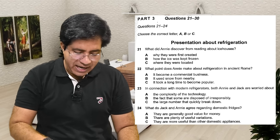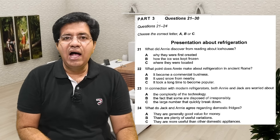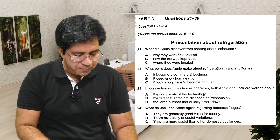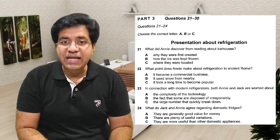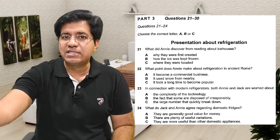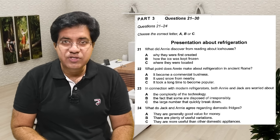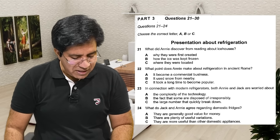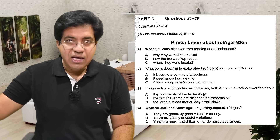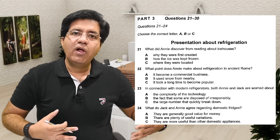Option B: 'How the ice was kept frozen' — shorthand: 'how ice kept frozen.' Option C: 'Where they were located' — 'they' means ice houses, so 'where ice houses located.' You should read pronouns with the nouns they refer to. So: option A — why ice houses created, option B — how ice kept frozen, option C — where ice houses located. I'll read all the questions first, then play the audio.